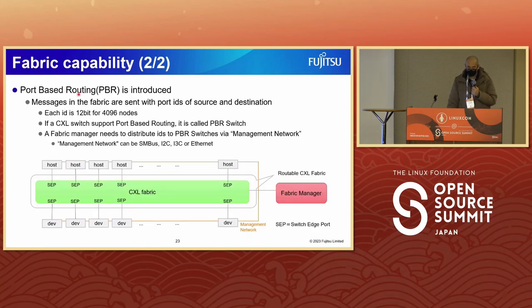Port-based routing is introduced for this capability. Messages in the fabric are sent with port IDs of source and destination, each ID being 12-bit for 4,096 nodes. If a CXL switch supports port-based routing, it's called a PBR switch. A Fabric Manager needs to distribute IDs to PBR switches via a management network, which can be SMBUS, I2C, I3C, or Ethernet — all are acceptable.